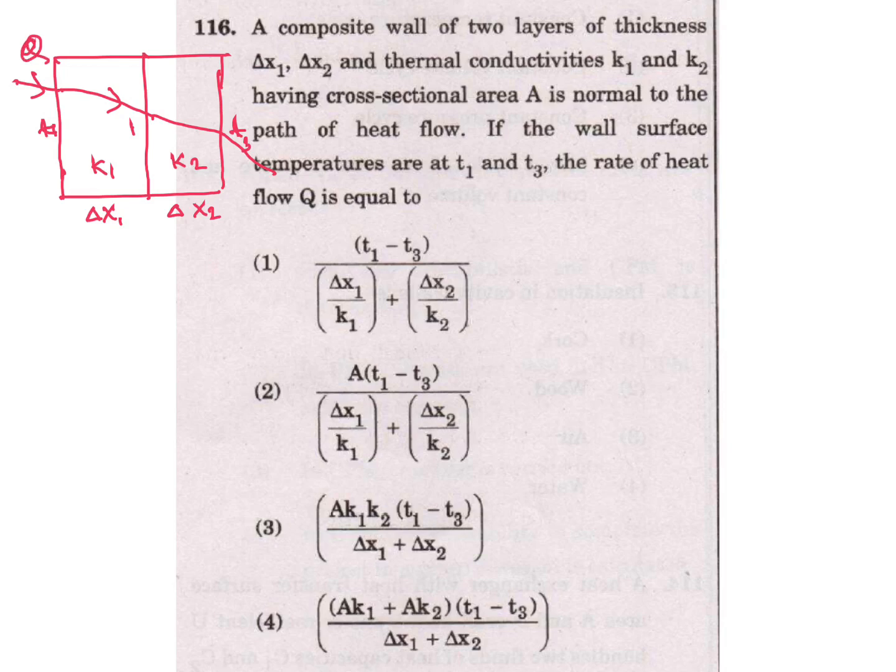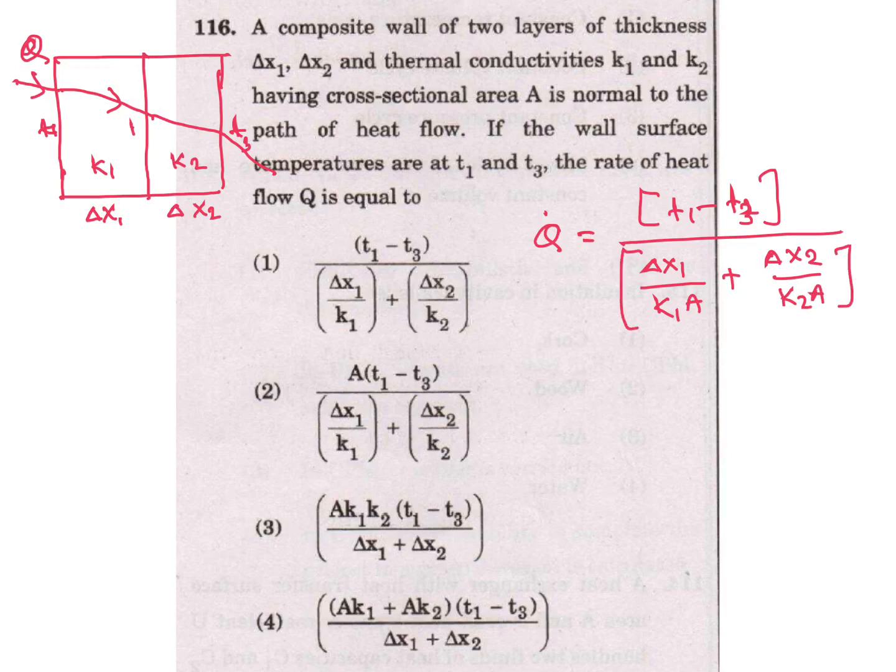So cross sectional area - our formula Q dot is T1 minus T3 divided by delta X1 by K1 A plus delta X2 by K2 A. So from option 2 is our answer. A is common here - cross sectional area is common. So A you can write here, 2 is our answer.